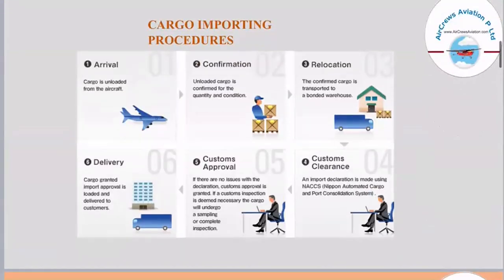If we talk about the importing procedure of cargo, the first step is arrival — the cargo is unloaded from the aircraft once it arrives. The next step is confirmation, meaning the unloaded cargo is confirmed for quantity and condition, verifying that it matches what was declared during export. After that, the third step is relocation, where the confirmed cargo is transported to a bonded warehouse for storage.